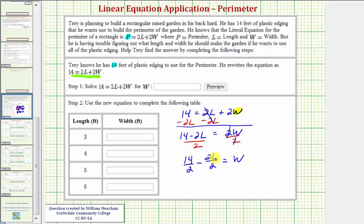But now looking back at the left side, notice how we can simplify these fractions. 14 divided by 2 equals 7 minus 2 divided by 2 simplifies to 1. So we just have 7 minus L equals W. So for step 1, again we have W equals 7 minus L.